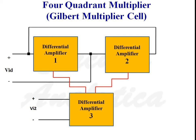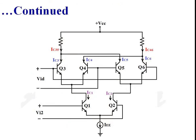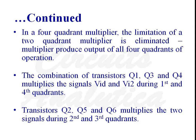This is the block diagram of a 4-quadrant multiplier, and this is the circuit diagram which consists of 6 transistors and a constant current source. Transistors are labeled Q1, Q2, Q3, Q4, Q5, and Q6. In a 4-quadrant multiplier, the limitation of a 2-quadrant multiplier is eliminated. The combination of transistors Q1, Q3, and Q4 multiplies signals VID and Vi2 during the 1st and 4th quadrants, while transistors Q2, Q5, and Q6 multiply the two signals during the 2nd and 3rd quadrants.